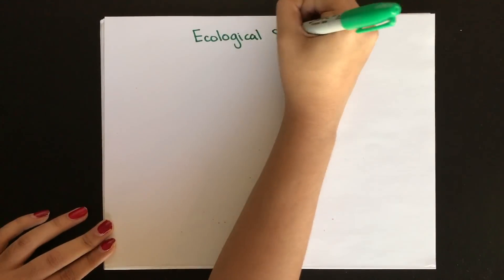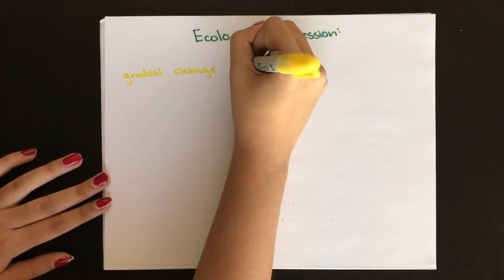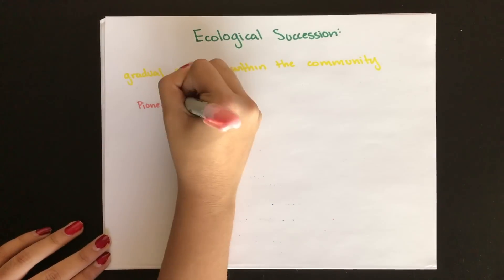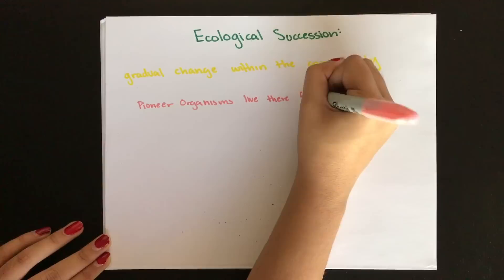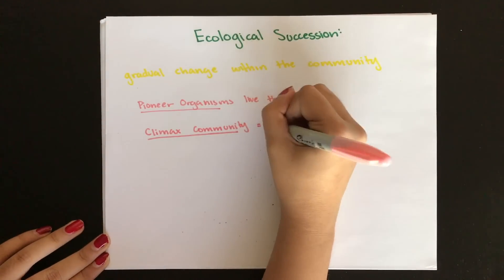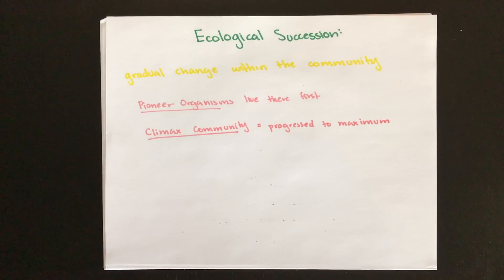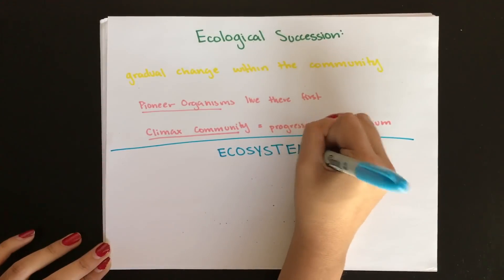Gradual change in an ecological community is called ecological succession. Pioneer organisms are the first to live in an uninhabited area — usually tiny organisms like mosses. Your climax community is what remains after succession has progressed as far as possible, such as large trees and huge plants.